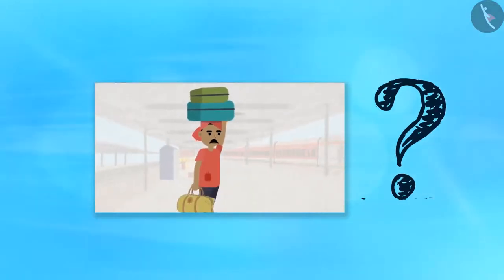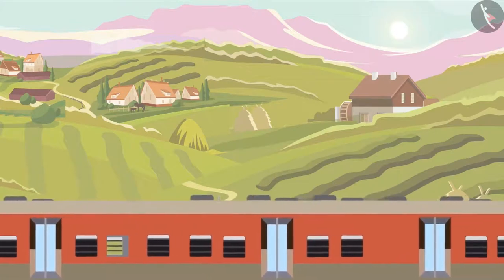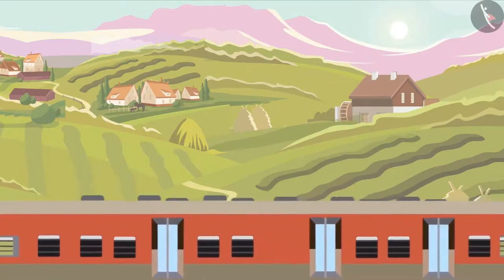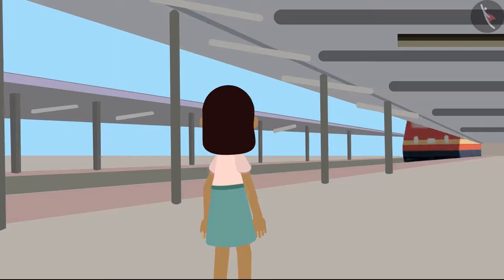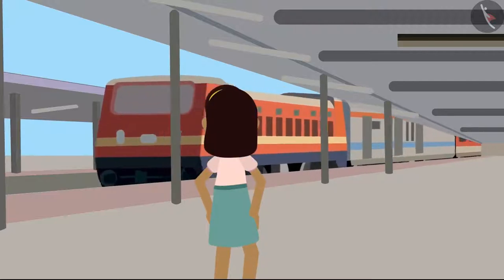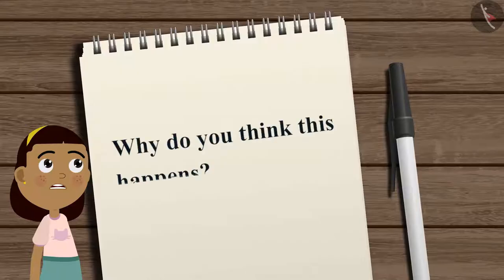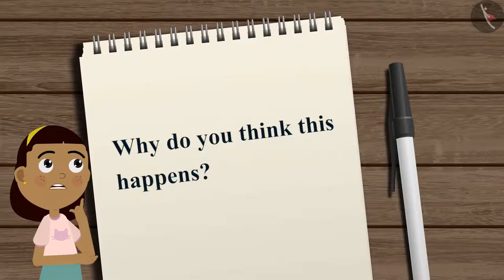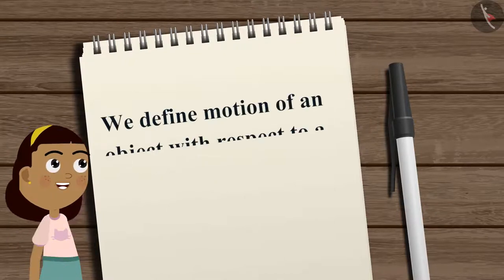For example, if you are traveling on a train, a person sitting next to you is stationary according to you. But for someone standing on the road observing the moving train, the same person is in motion. Why do you think this happens?